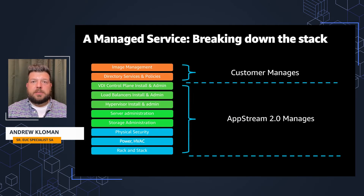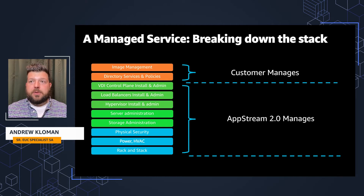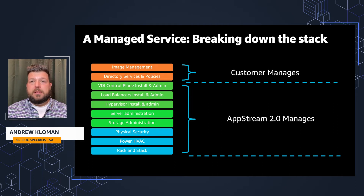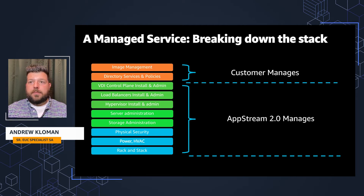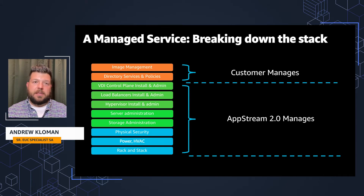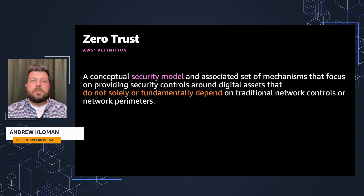Let's break down the stack and see where Amazon AppStream fits. Amazon AppStream 2.0 does all the heavy lifting. Customers don't have to set up or manage a control plane. The customer is only responsible for managing the applications, the image management section, and any directory services, identity, and access policies. The key thing is that customers can focus on what is meaningful to their business, and any undifferentiated heavy lifting is left to AWS.